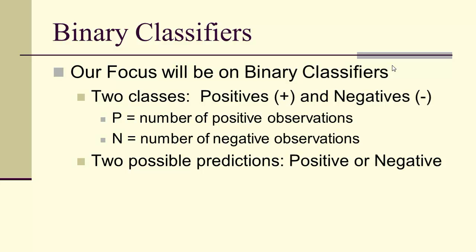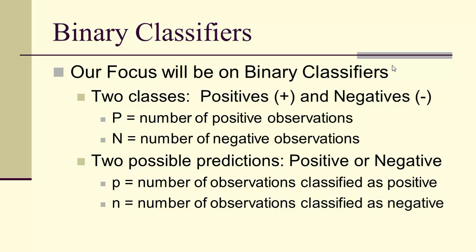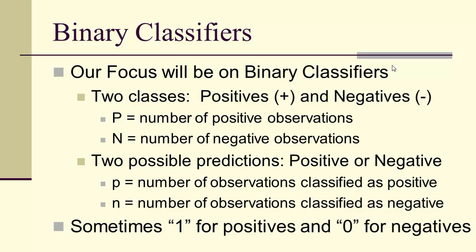We have two possible predictions — positive or negative. Little p will be the number of observations classified as positive, and little n the number classified as negative. Note we've used p for probability, but now we're using capital P for number of positive observations and little p for number classified as positive. Sometimes we'll use 1 for positives and 0 for negatives.